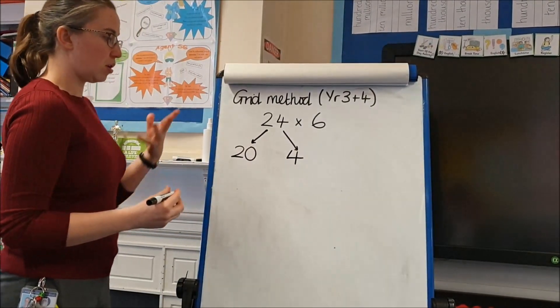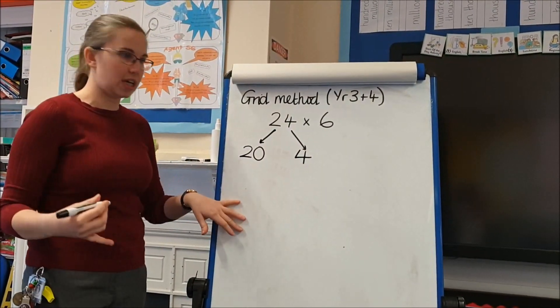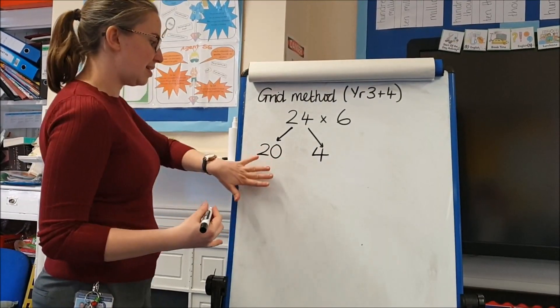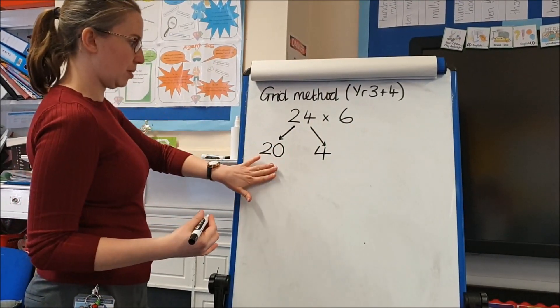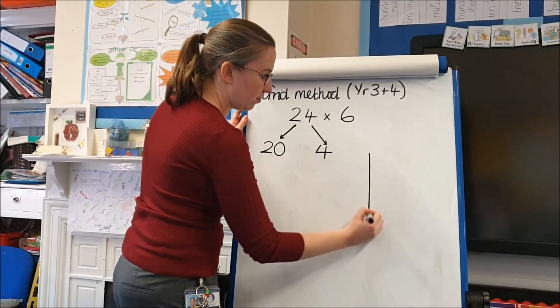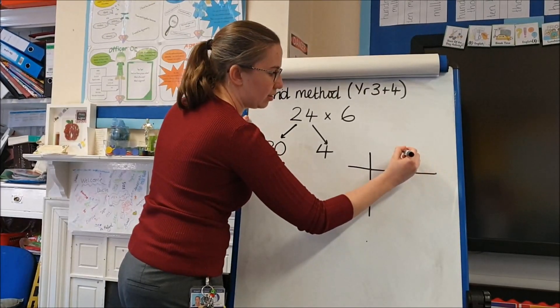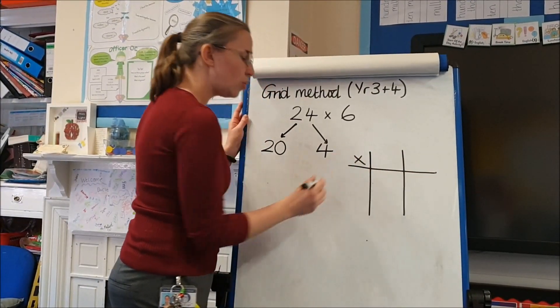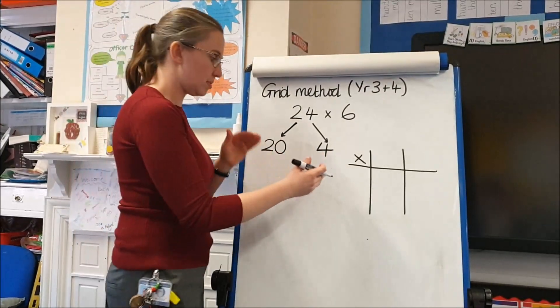Then what we can do, which is why it's a really nice mental method when children get to year 5 and 6, is we can use our mental maths to help us calculate. Now in a grid form, we would lay it out like so, which is similar to a multiplication times table grid.